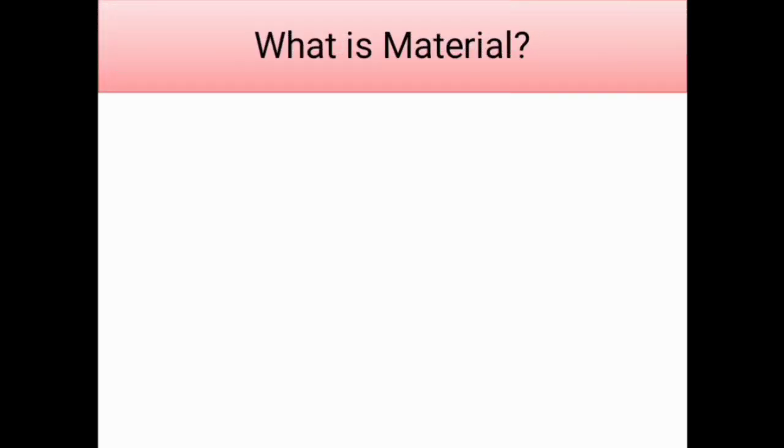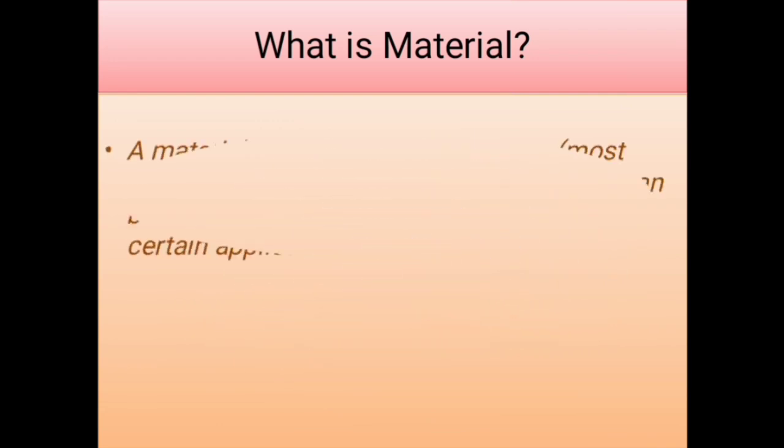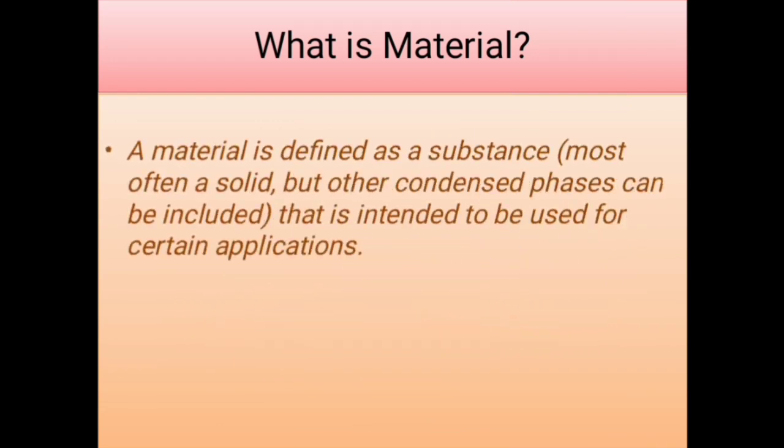So what is called material? Here is the definition. A material is defined as a substance, most often a solid but other condensed phases may be included, that is intended to be used for certain applications.